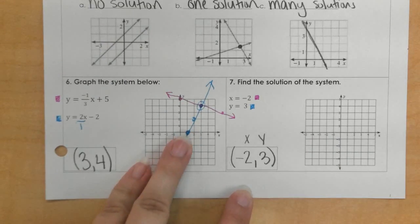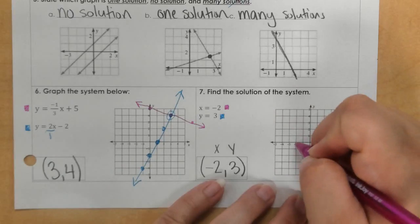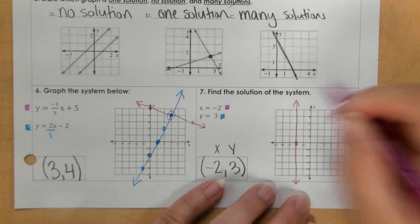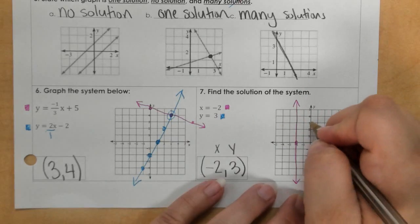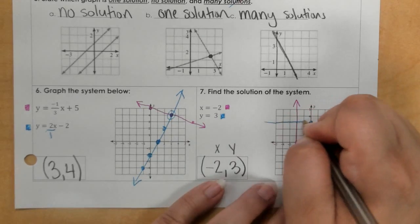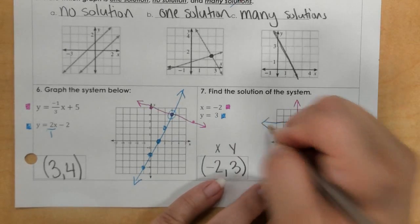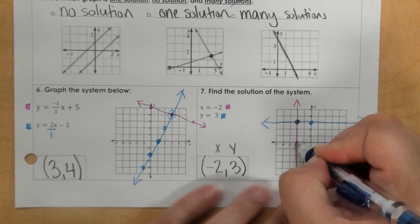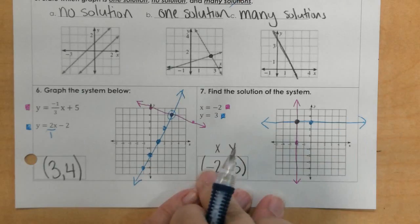But to graph it, x at negative 2 would be a straight up and down line, vertical line. And then 3, we go left to right. You can see that the point where they meet is negative 2, 3, which is what we already have here.